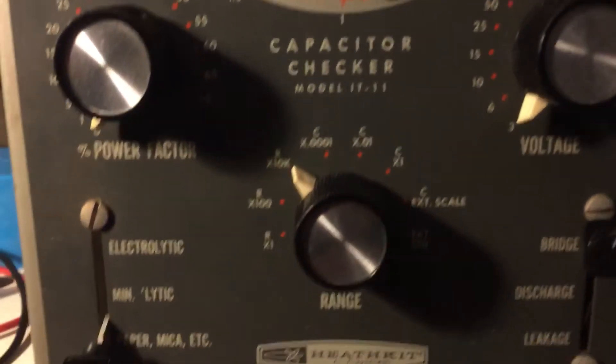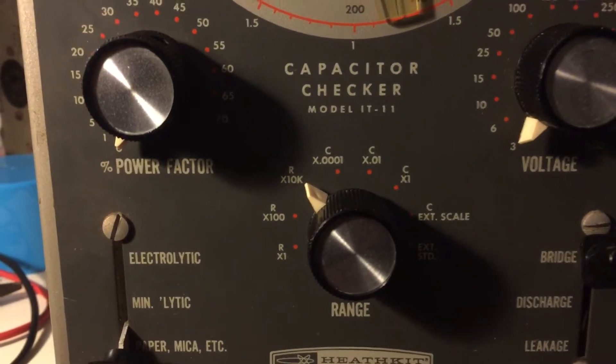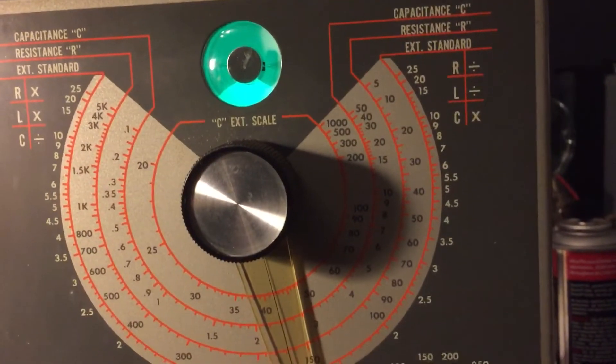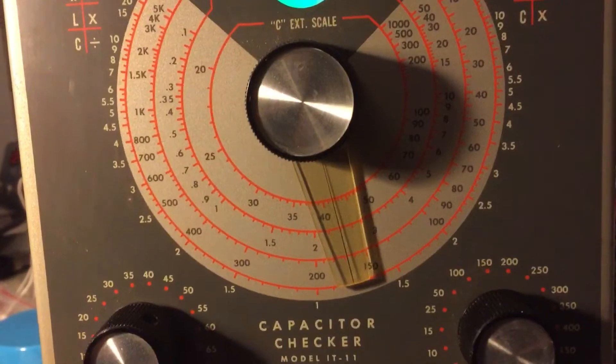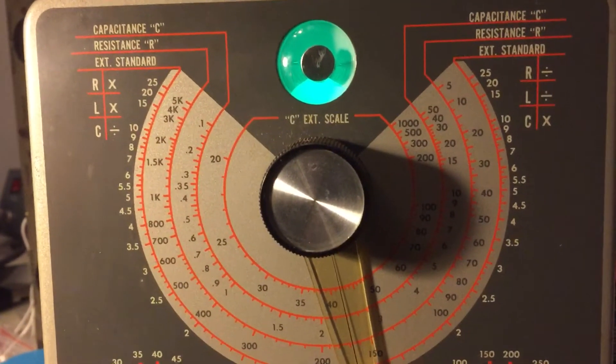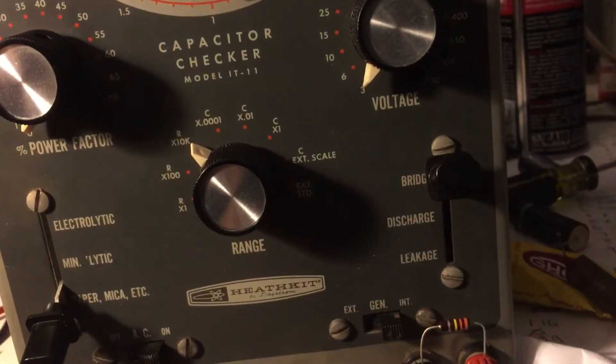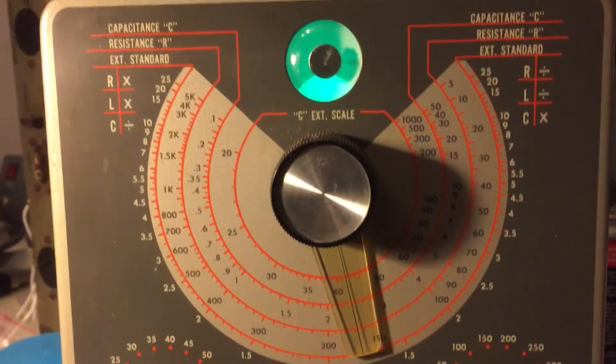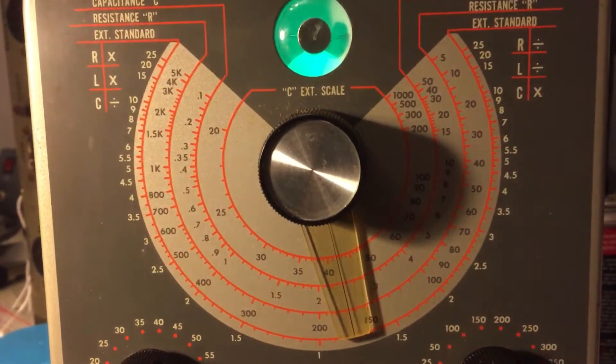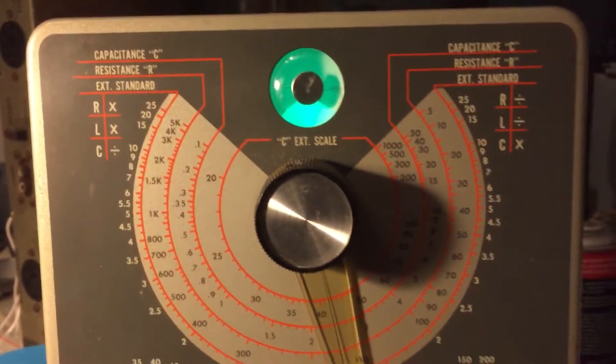I have the capacitor checker set on 10k, and what I want to do is move this dial, this knob, and bring this circuit into balance so that the value of the resistor and the value of the reference inside plus the offset balances the circuit and causes the eye to open.